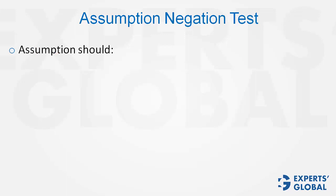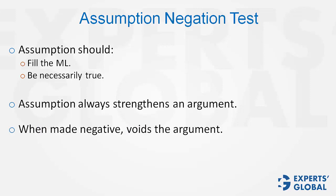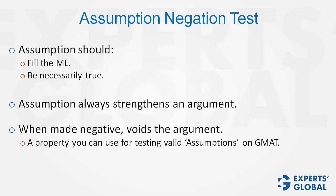Assumption Negation Test. Remember, a correct assumption should fill the missing link between the premise and the conclusion, and it is something which is necessarily true for the argument to hold. An assumption always strengthens an argument, and when made negative, it voids the argument. This is a property that you can use for testing valid assumptions on GMAT.